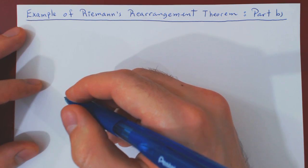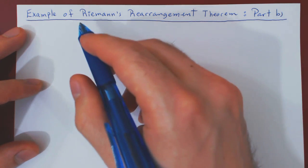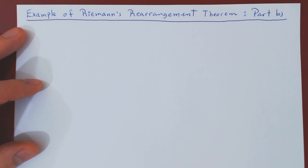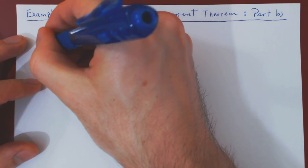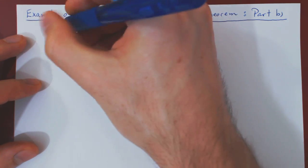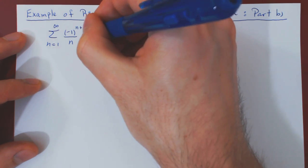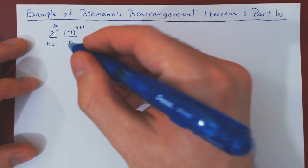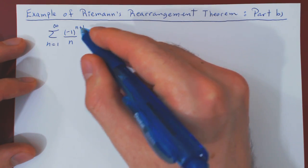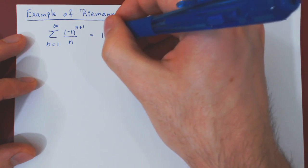In this video, we will give a simple yet elegant example of part B of Riemann's Rearrangement Theorem. All we need to begin with is a series that converges conditionally. We'll take the following one: summing from 1 to infinity, negative 1 to the n plus 1 over n. If we write out the first few terms of the series, what we are doing is summing the reciprocals of the integers with an alternation in sign.